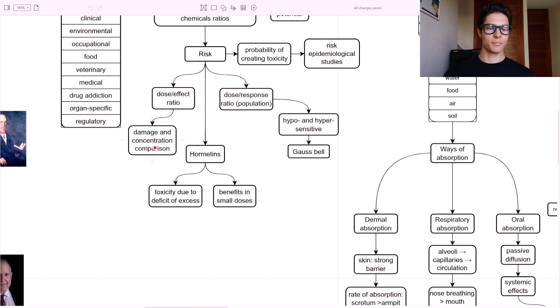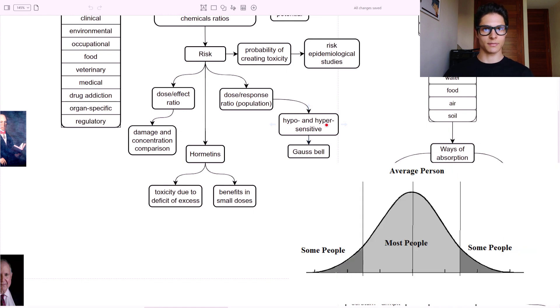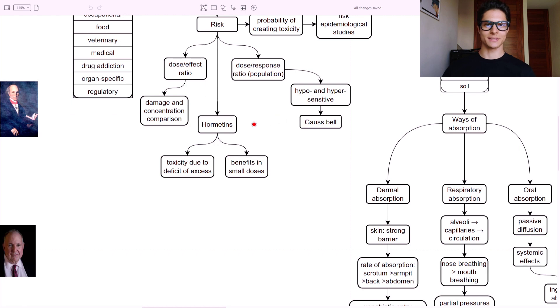The dose-effect ratio compares the damage and the concentration. So at what concentration do we have this effect on the body? Whereas the dose-response ratio is in charge of the population. So at what dose does the majority of the population get this effect? And by doing that, we can also identify hypersensitive and hyposensitive individuals. And we use a Gauss bell for that. And of course, this data comes from risk epidemiological studies. And then we have the hormesis. These are substances that can give us a little bit of benefits when taken in small doses but become toxic when we exceed the dose. This is indeed the principle behind medicinal drugs.